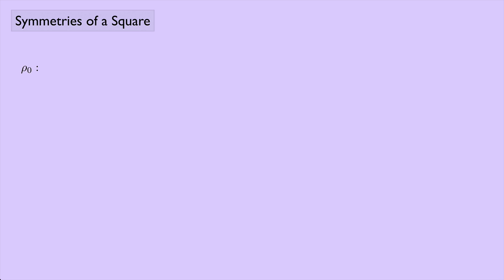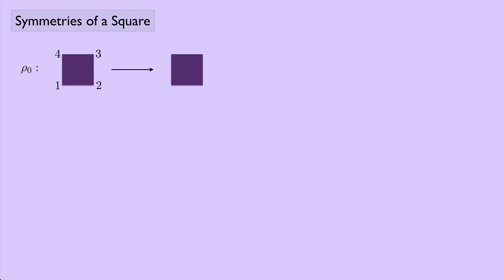The first operation I'm going to call ρ₀, the identity. I'll number the corners of the square 1, 2, 3, and 4. This operation leaves the square exactly where it was: 1, 2, 3, 4 all stay in place.